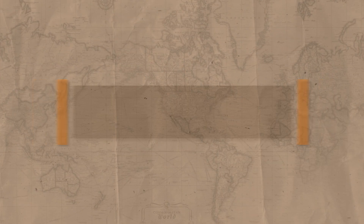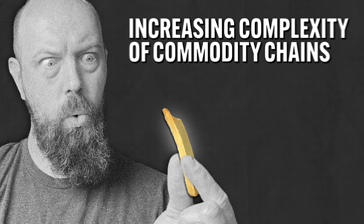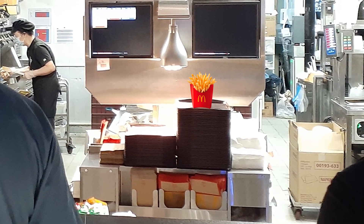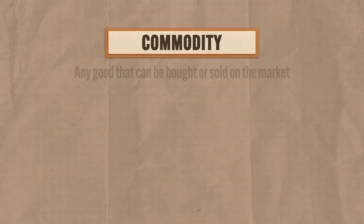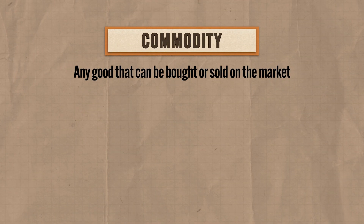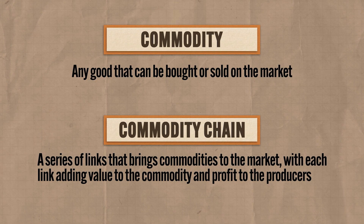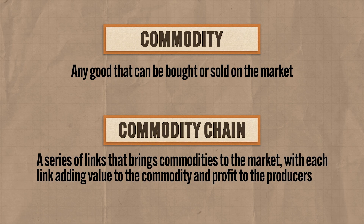That sets the stage well enough for us to return to those lovely french fries. This french fry is a perfect illustration of another way economics affects the spatial distribution of agriculture, namely the increasing complexity of commodity chains. Think about it — how does McDonald's get this french fry into your hand and then into your mouth? Because those sweet bippies don't just magically appear in red cardboard back in the kitchen. There's a whole complicated process that gets this fry into your belly, and that process is known as the commodity chain. A commodity refers to any good that can be bought or sold on the market, like milk or corn. Therefore, a commodity chain is the series of links that brings those commodities to the market, with each link adding value to the commodity and profit to the producers.